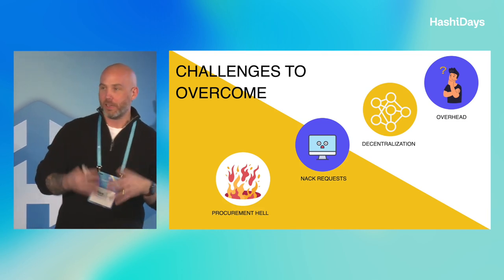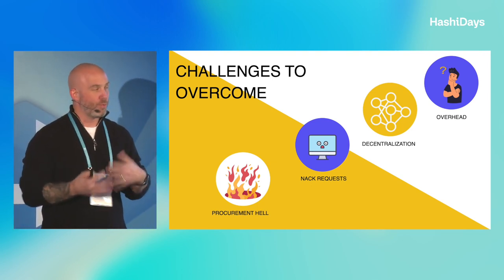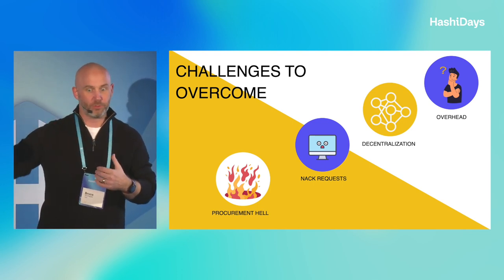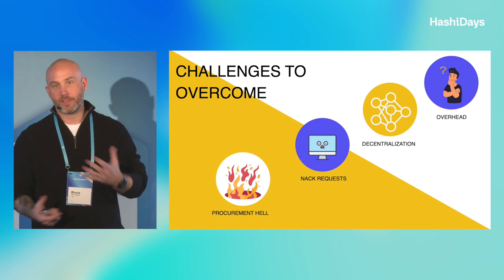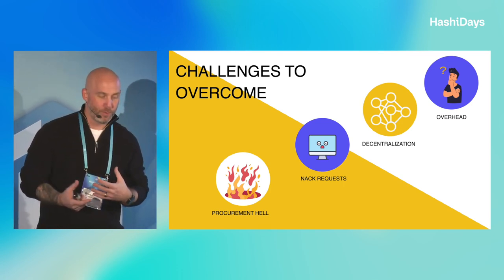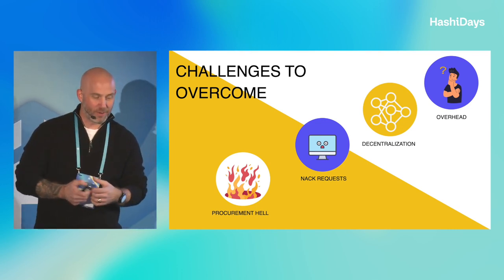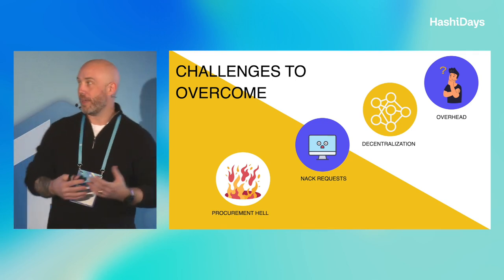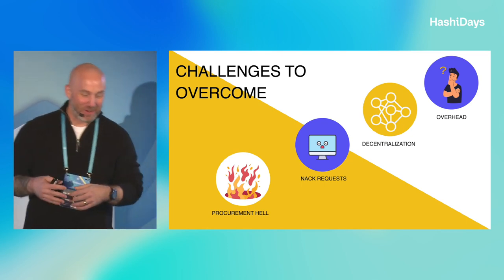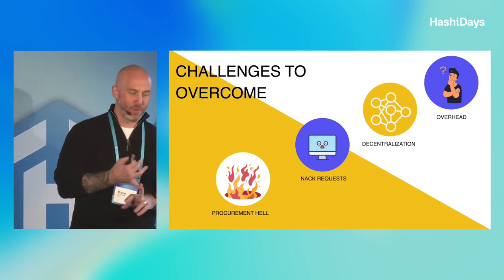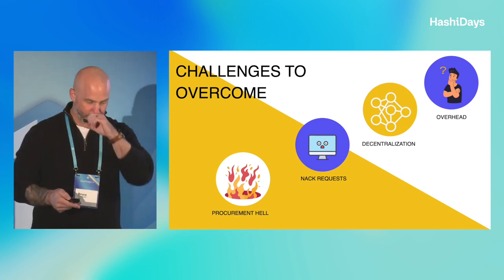As we started to scale our usage of Terraform, not only did we have to run the procurement gauntlet — eight to twelve weeks for each new team — our backlog for servicing those requests was ever-growing. We also had a decentralized structure, which meant a lack of standards, governance, and inconsistencies in how we used Terraform across the organization. With every new org created, we had overhead to track the number of runs and admin access, all with cost implications every time we renegotiated, because admin users were expensive.